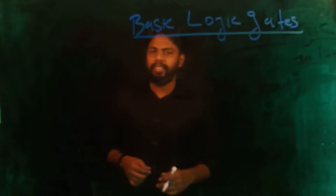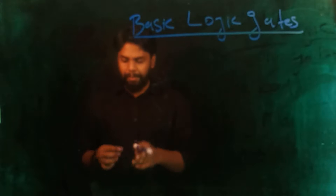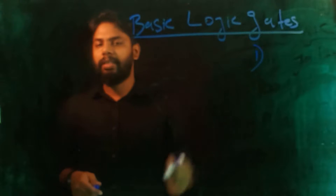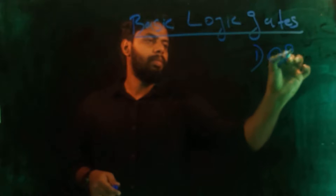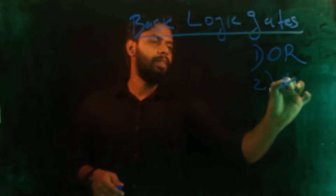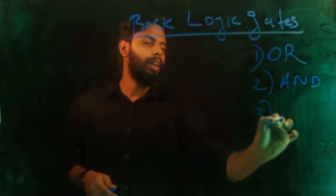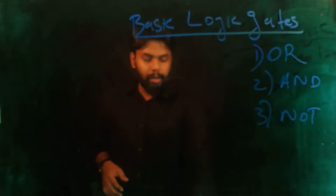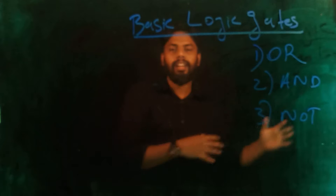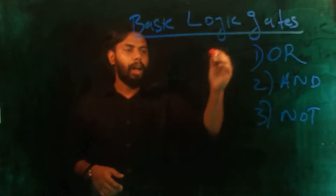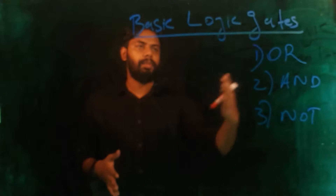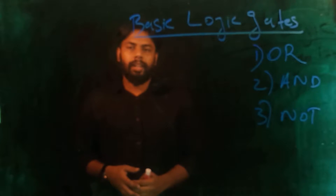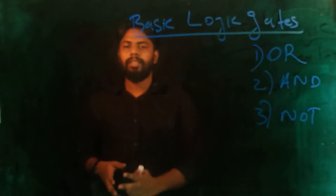We have discussed the basic logic gates in the 3rd semester. We are going to discuss these three basic logic gates and design all of these circuits. We are going to discuss the truth table, logical diagram, and symbolic diagram.